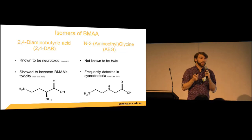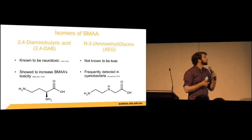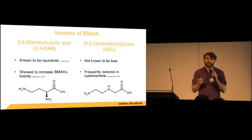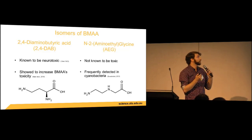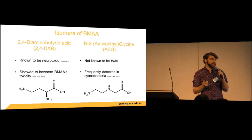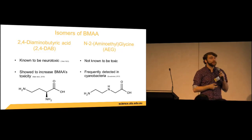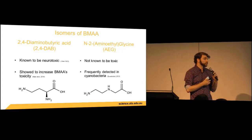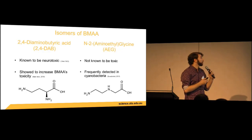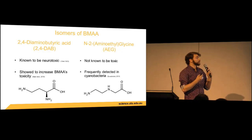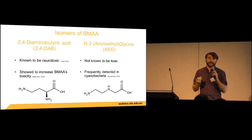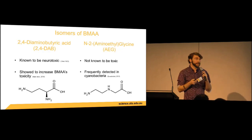Constitutional isomers have the same molecular weight and similar physicochemical properties. They're thought to be produced by the same species — cyanobacteria, diatoms, and dinoflagellates — so it's essential that when we monitor one of these molecules we are looking for all of them simultaneously to ensure no misidentification occurs. 2,4-DAB is known to be neurotoxic in its own right, and importantly it has been shown to increase BMAA's toxicity, so it's important to know which species produce both BMAA and 2,4-DAB simultaneously.